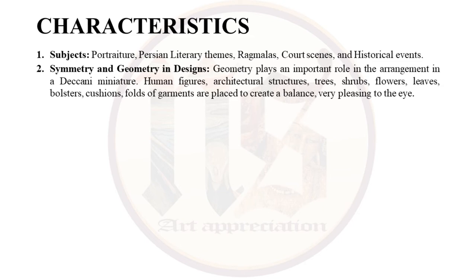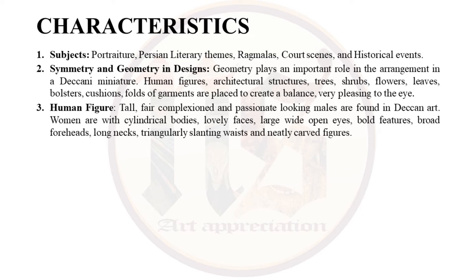Be it human figures, architectural structures, trees, shrubs, flowers, leaves, bolsters, cushions or folds of garments — everything was placed to create a balance which looks very pleasing to the eye. Regarding human figures: tall, fair-complexioned and passionate-looking males are found in Deccan art. Women are also depicted with cylindrical bodies, lovely faces, large wide-open eyes, bold features, broad foreheads, long necks, triangularly slanting waist and neatly carved figures.